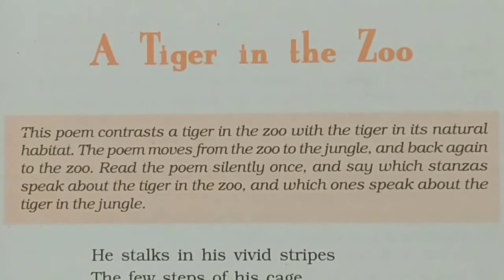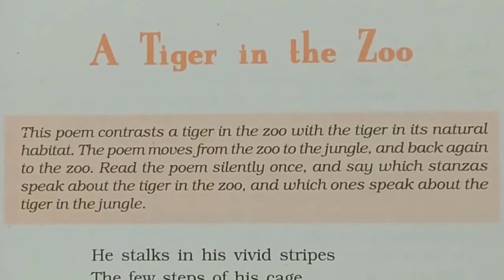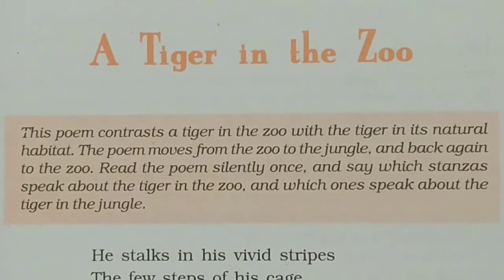This poem contrasts a tiger in the zoo with the tiger in its natural habitat. The poem moves from the zoo to the jungle and back again to the zoo. Now read the poem silently once and say which stanzas speak about the tiger in the zoo and which ones speak about the tiger in the jungle.